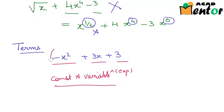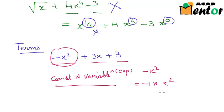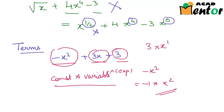For example, if you look at the first term of this expression, that is negative x squared, I can write it as minus 1 times x to the power 2. So this is one term of this polynomial. The second term is 3 times x to the power 1, and the third, the constant term, is nothing but 3 times x to the power 0.